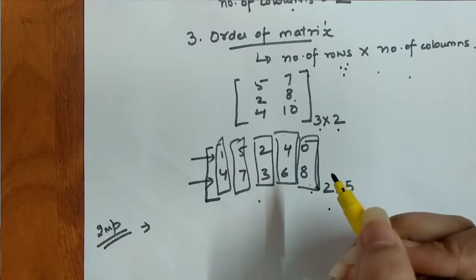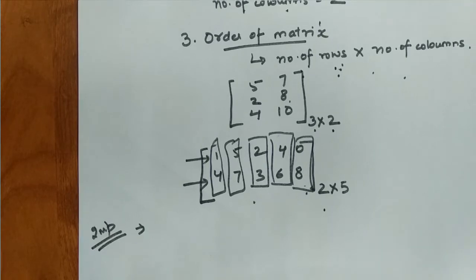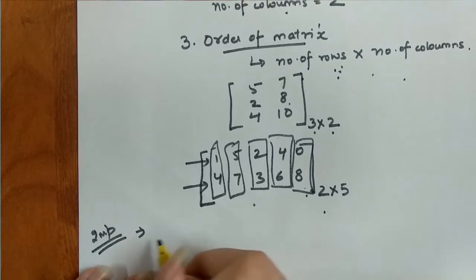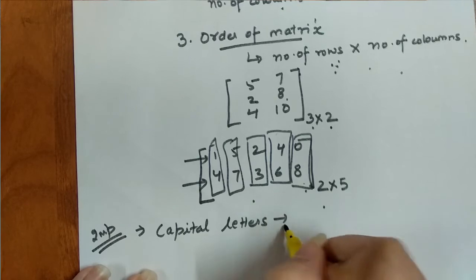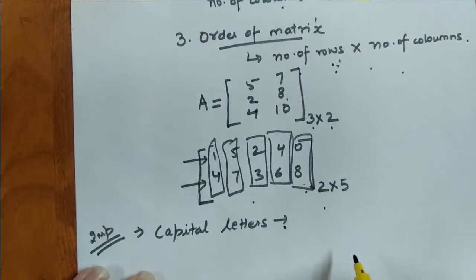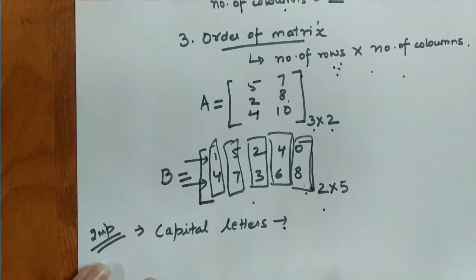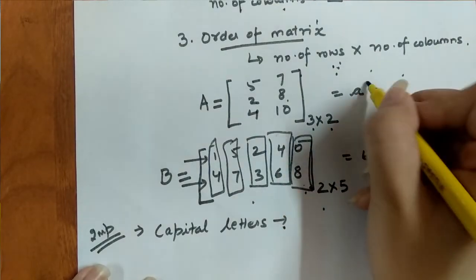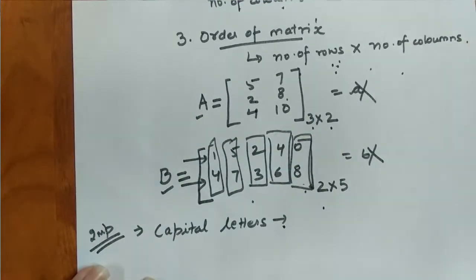Another terminology is the naming or representation of a matrix. We represent each matrix with a unique name for general representation. An important point: when we give a name to a matrix, we use capital letters — alphabetic capital letters. For example, the first matrix we discussed is named matrix A, and the second example matrix is named matrix B. We cannot write the matrix name in lowercase; capital letters must be used to represent matrices.